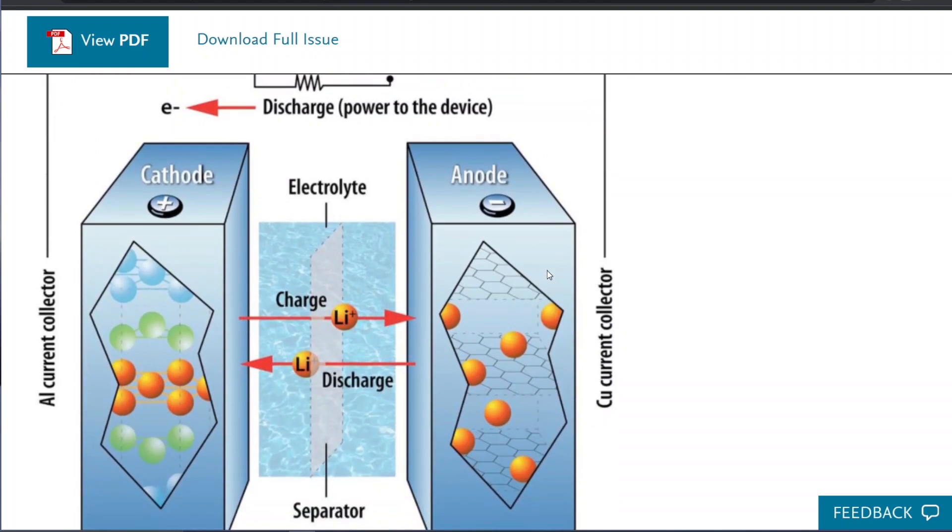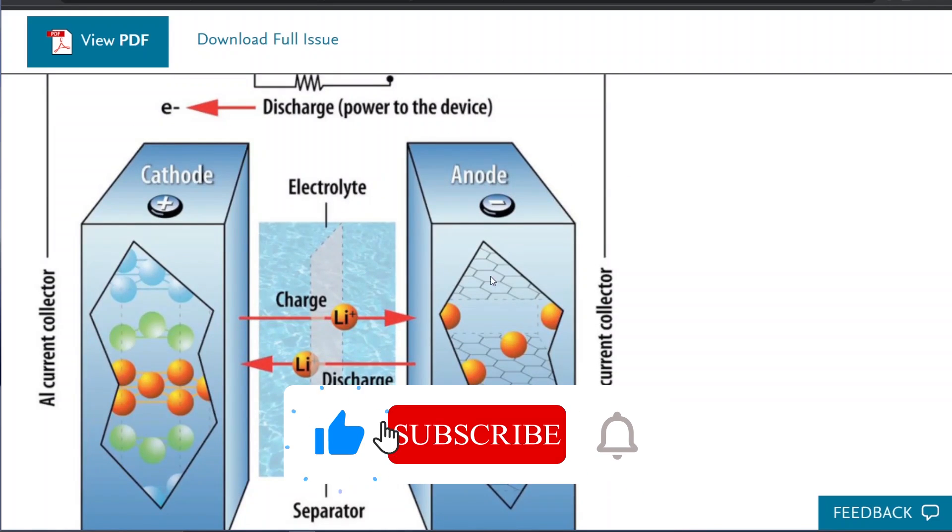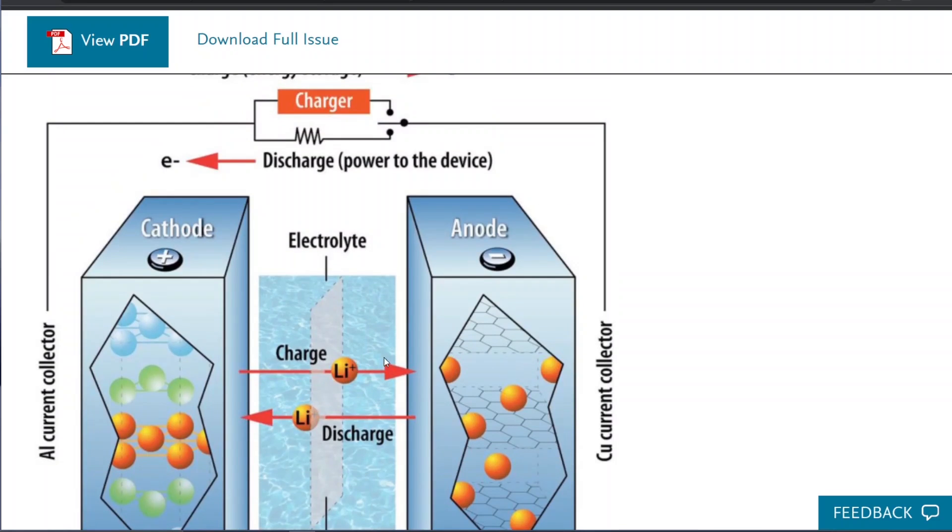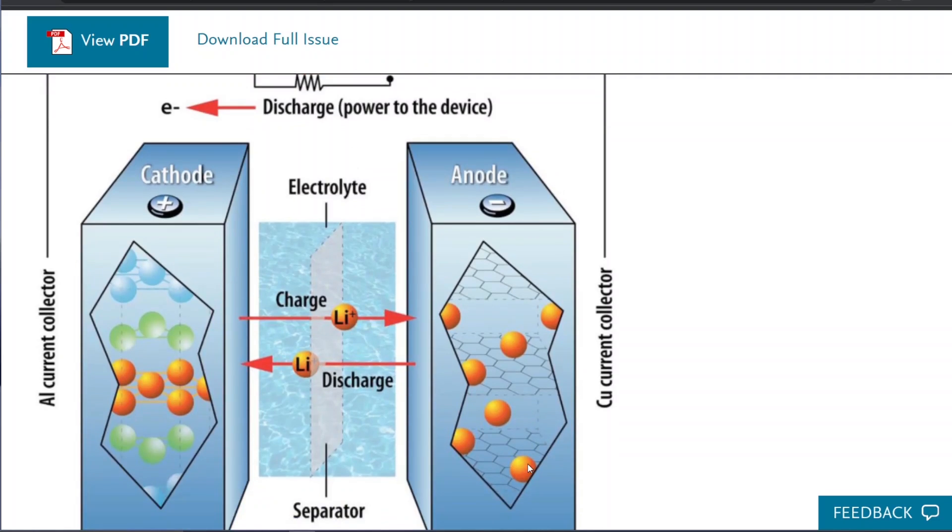All right, so this is a picture that shows kind of a schematic of how a lithium-ion battery works. What you have is a copper current collector on the anode. The anode is usually graphite. Sometimes they add a little bit of silicon to increase the carrying capacity of the anode. So the anode's job is to hold the lithium ions in the charged state.